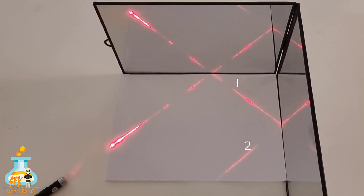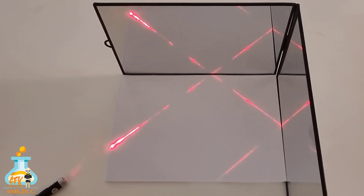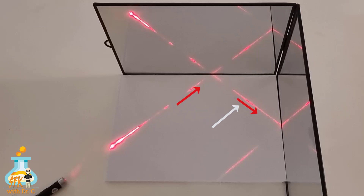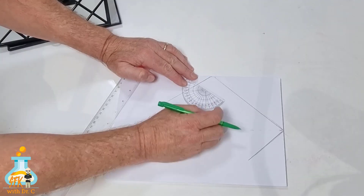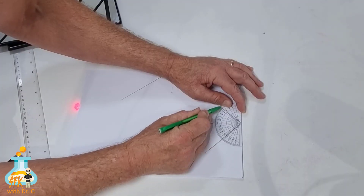Is there another incident ray? Where's the other incident ray? There's an incident ray here because it goes into the mirror. Is this one coming out of the mirror? Yes, so it's reflected — but it's also going into the mirror, right? So that ray is actually both. Here's what you're going to do to test the law of reflection: trace these lines, draw the normal line, use a protractor, and test the angles.